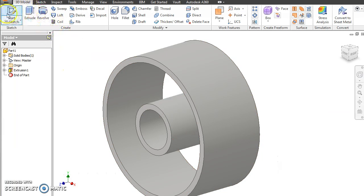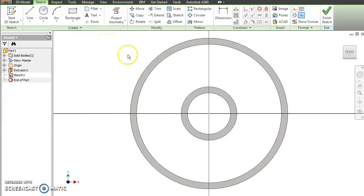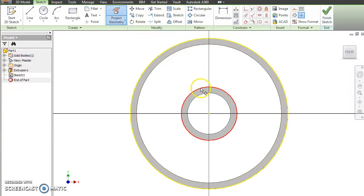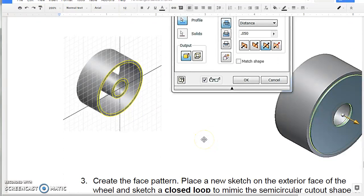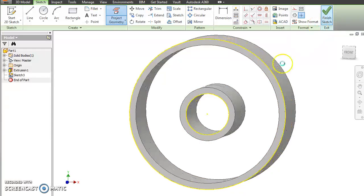So we're going to go start doing Sketch, select our plane, and then we're going to Project Geometry. So we'll Project this and, is it the intersection? Yeah, inside. Project that and that. Finish the sketch.